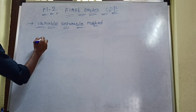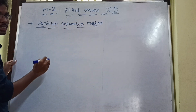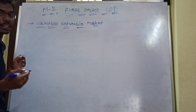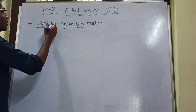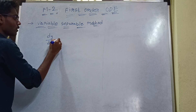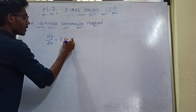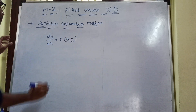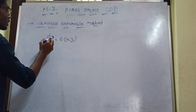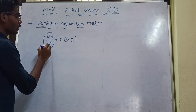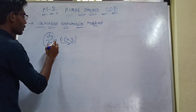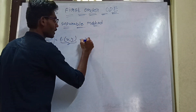Variable separable method deals with first-order differential equations — the degree is only one. Higher-order equations come in the next chapter. For variable separable method, the form we use is: dy/dx = f(x, y). This is the form we need to recognize first — that is Step 1.